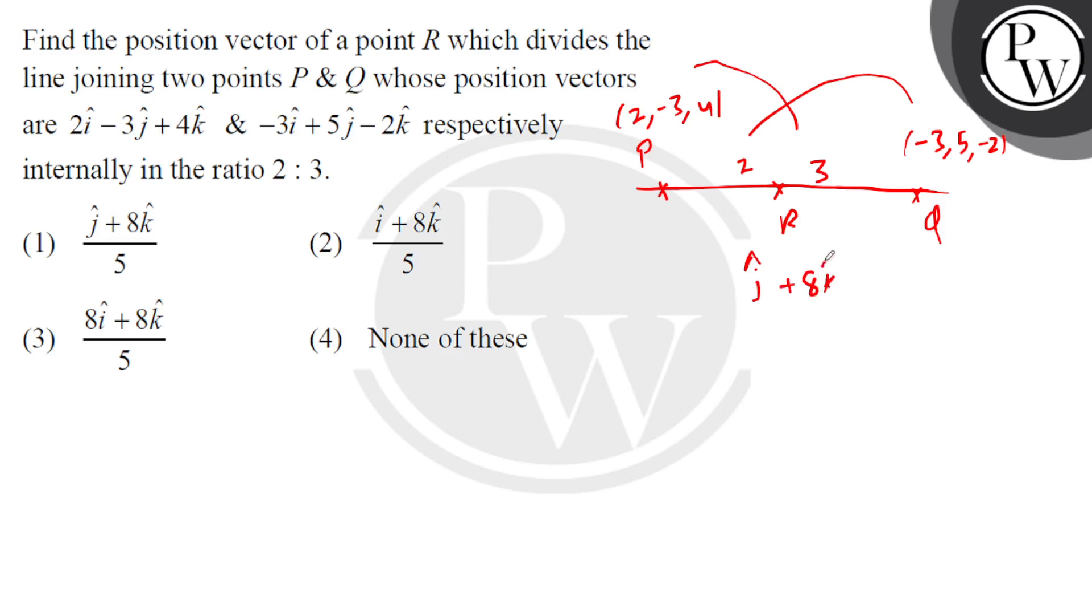And upon 2 plus 3 which is basically 5. So this is the final answer: j cap plus 8 k cap upon 5. The correct option is option 1. I hope you understood well, best of luck, thank you.